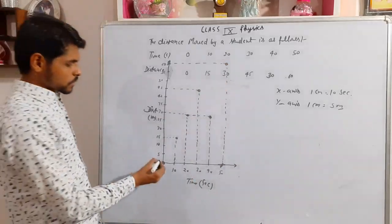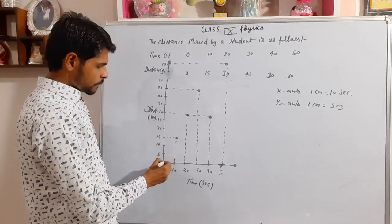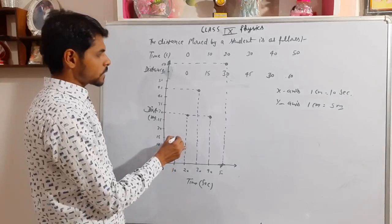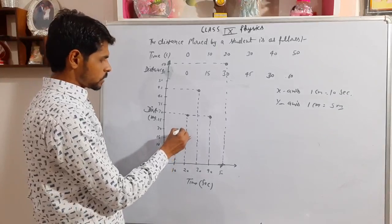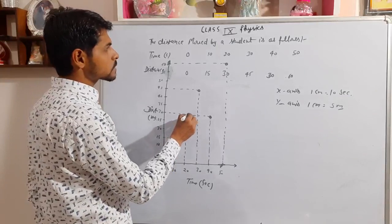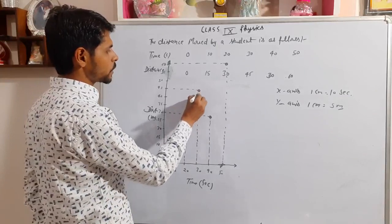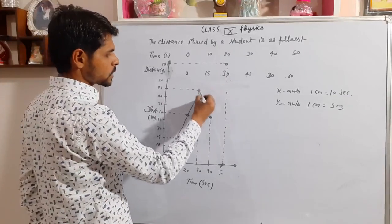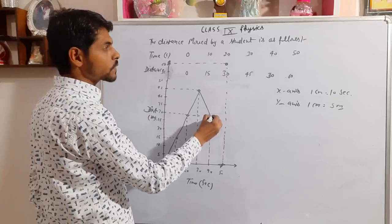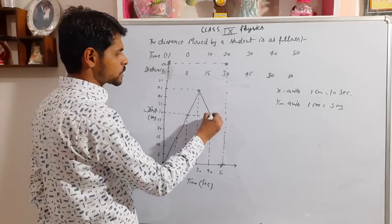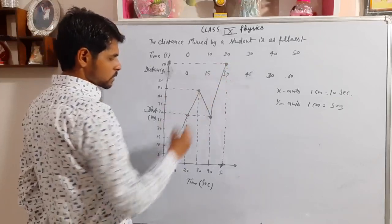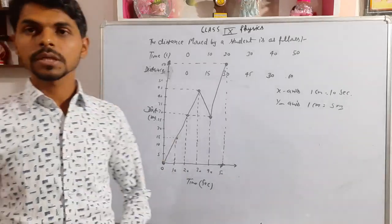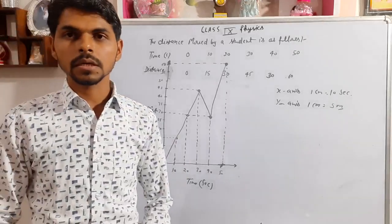We connect the points: starting from (0,0), moving to (10,15), then (20,30), then (30,45), then back down to (40,30), and finally up to (50,60). This gives us the complete distance-time graph for the student's motion.